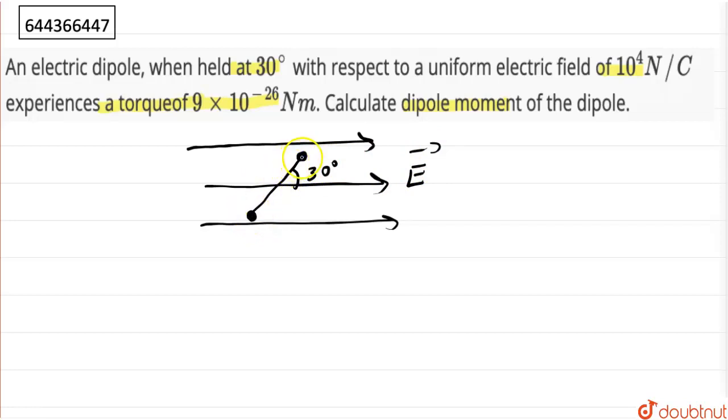Okay, this is a dipole and the angle is 30 degrees and we have to calculate the dipole moment. We are given that the torque it experiences is 9×10^(-26) Newton meters of torque.